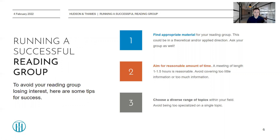A good idea to start getting people engaged is to ask them what kind of topics should we cover in this reading group. Everyone will certainly have an opinion on things that they would like to see discussed. Secondly, when setting up the reading group, aim for a reasonable amount of time.